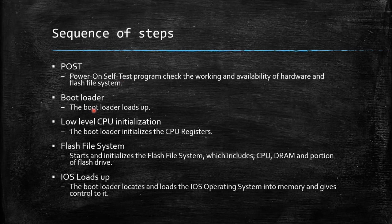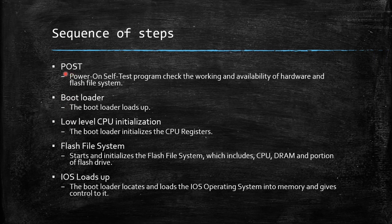The third step: when the bootloader loads, it initializes the low-level CPU — meaning it initializes the CPU registers. The fourth step is flash file system initialization, which includes CPU, DRAM, and a portion of a flash drive. After all these steps — POST, bootloader, CPU init, and flash file system initialization — the fifth step is loading the IOS, which will handle all the operation of the switch. The bootloader locates and loads the IOS operating system into main memory and gives control to it.